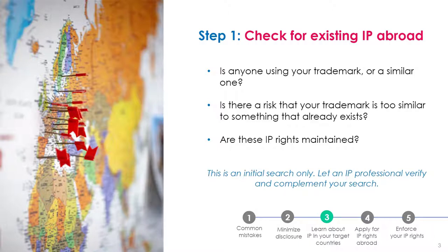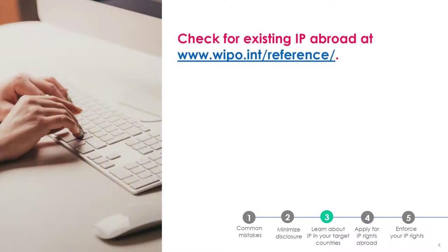Can you guide people to some good places online where this information is available? In our previous video series on IP strategy, specifically the video about how to do an external IP audit, we showed how to search for others' IP rights. This is the kind of search where you look at your competitors regardless of where their IP is protected.